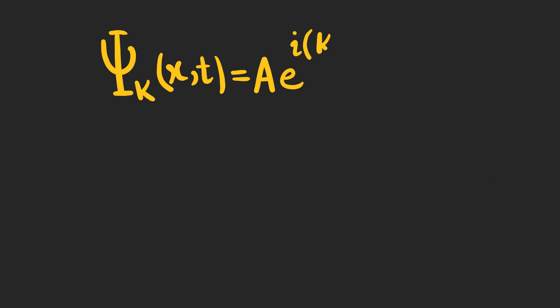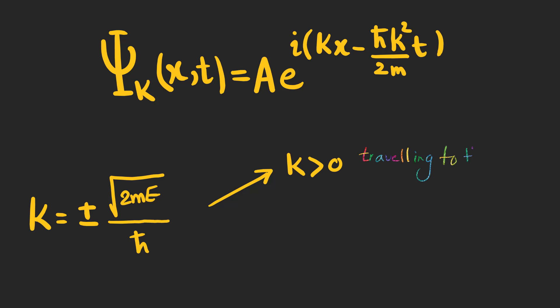So, the wave function can be written as this expression, in which k can be positive or negative. If k is positive, the wave is traveling to the right, and if k is negative, it is traveling to the left.